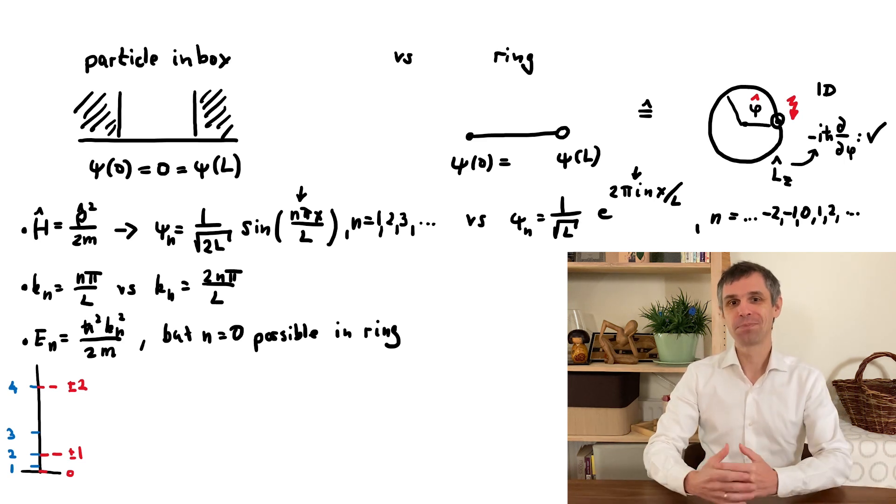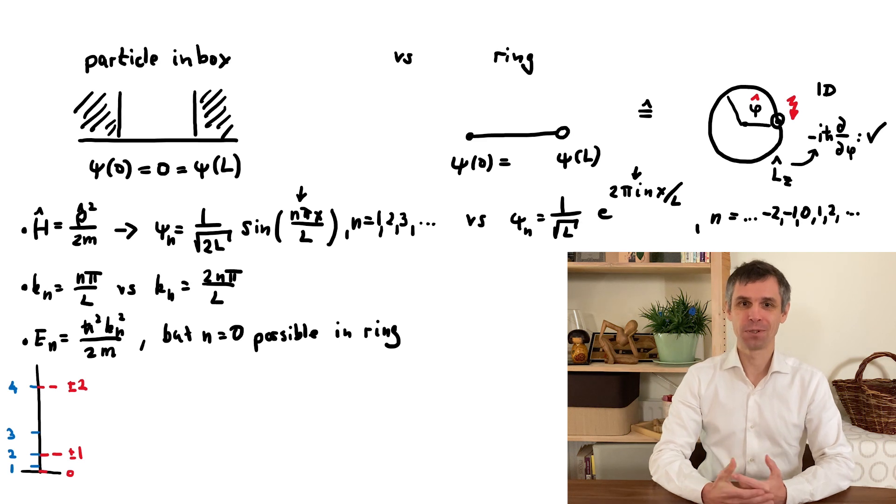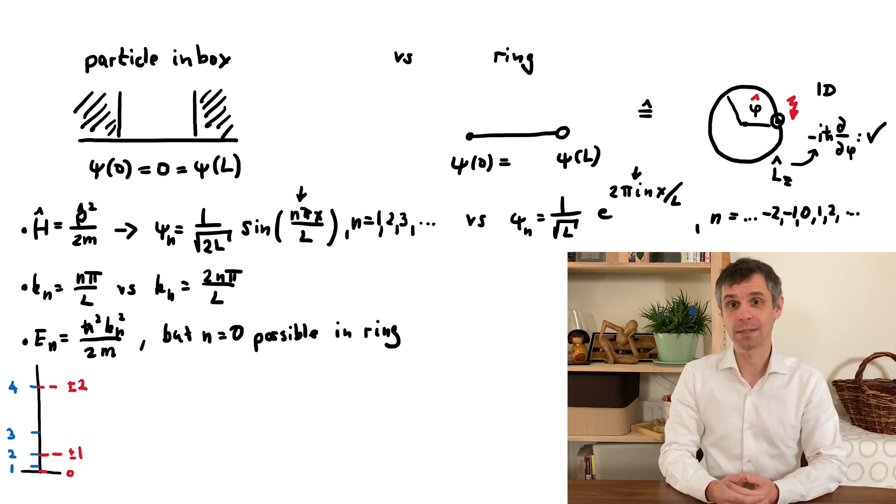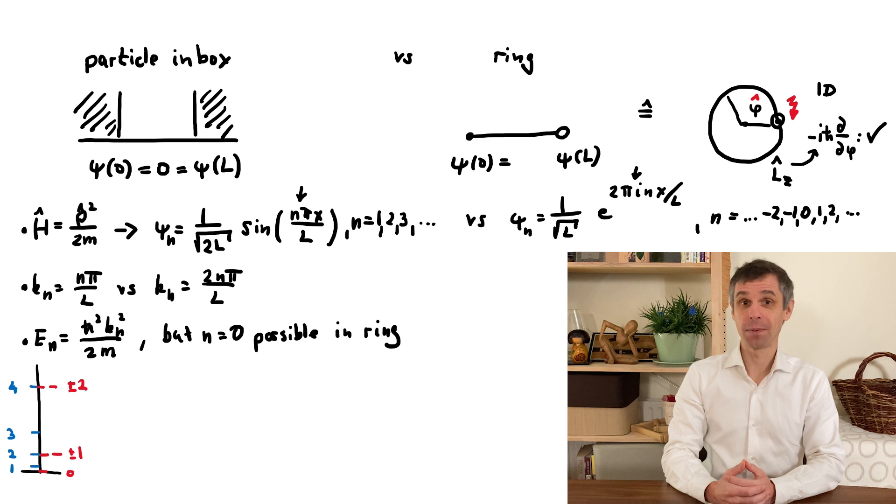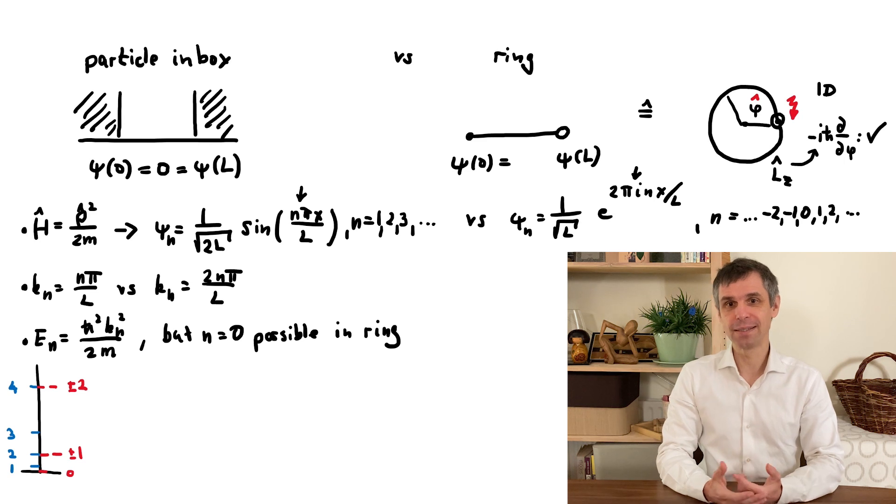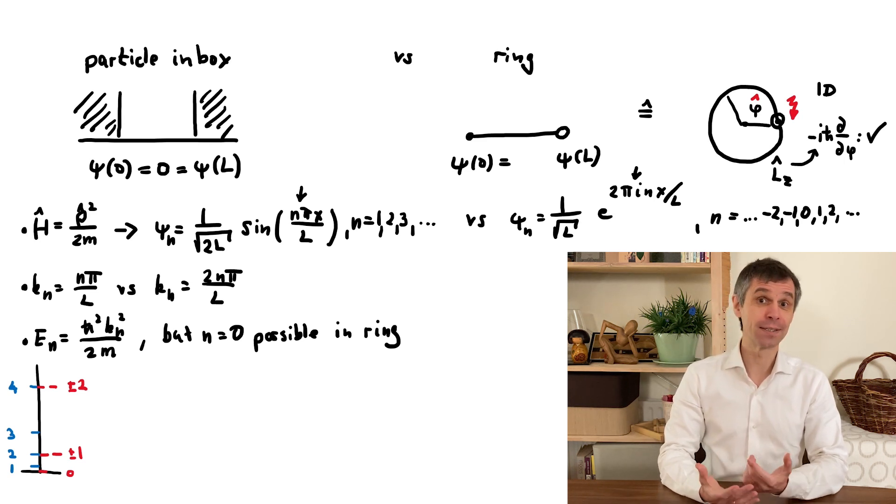Now such angles appear also in other settings, with an important example being a superconductor. These can be described by a complex parameter delta, which is an energy scale but also carries a complex phase. When you couple two superconductors with different phases together, you find that a dissipationless current flows between them. This is known as the Josephson effect.